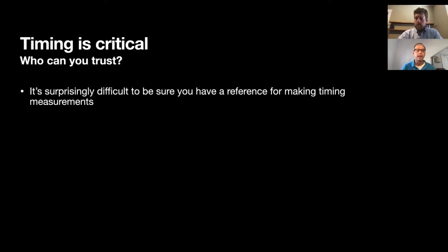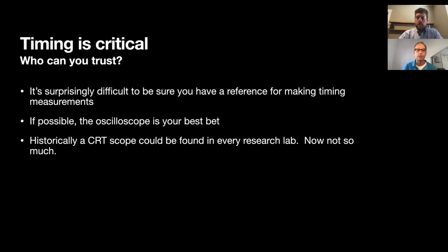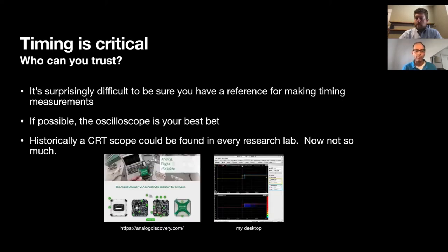When it comes to timing, who can you trust? This is actually surprisingly difficult — timing isn't always something where you know where the real time is. Historically, an oscilloscope is your best bet. Most labs these days don't commonly have a scope in behavioral labs, though they're certainly common in physiology labs. Technology has helped out a lot here, because there are portable, cheap scopes — on the order of a couple hundred bucks — that are quite good and can give you resolution well beyond what you'd care about from a behavioral perspective. I actually have one here called the Analog Discovery. It's possible to run these on your computer and get good access to timing.